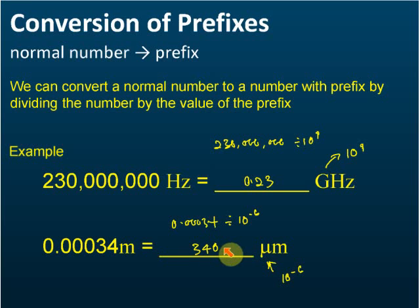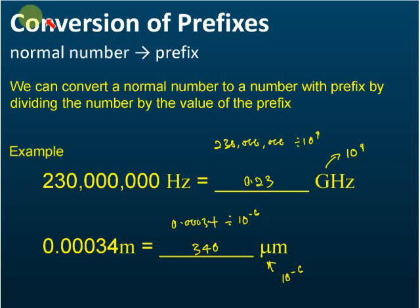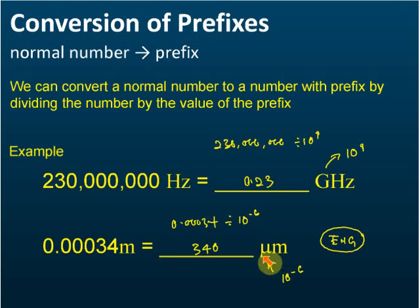I'm going to teach you how to use a calculator to do this easily. Your fx-570MS has a special function — you don't need to do any calculations manually. Just use the ENG function in your calculator to convert to the prefix. I'll teach you this in a video lesson I'll upload later.